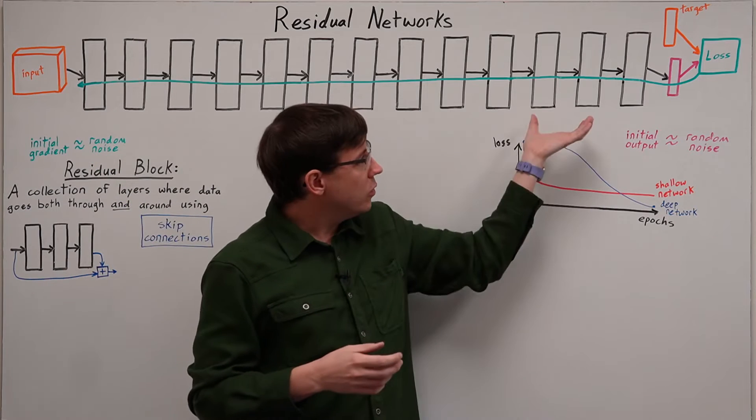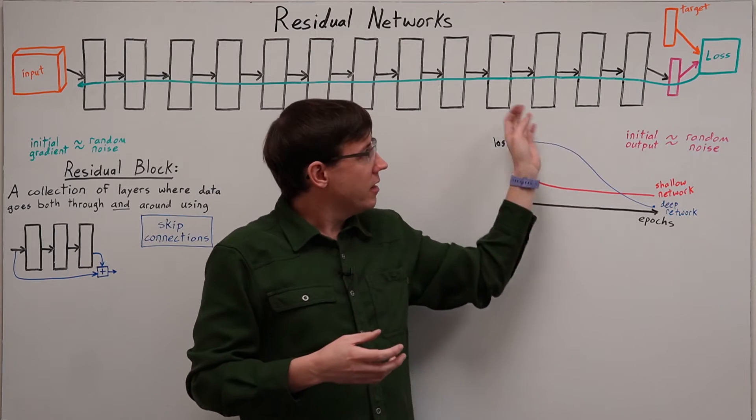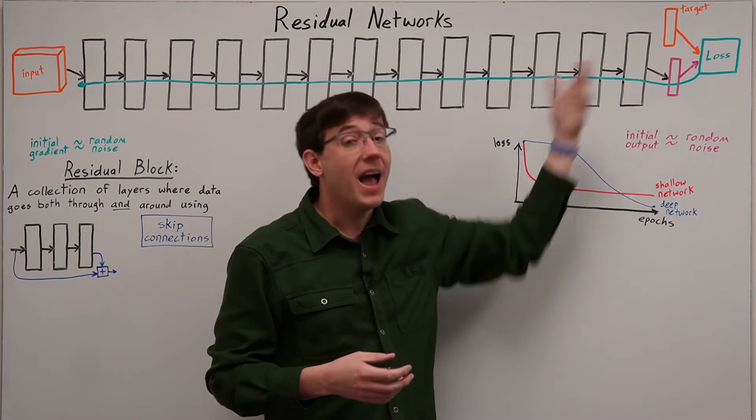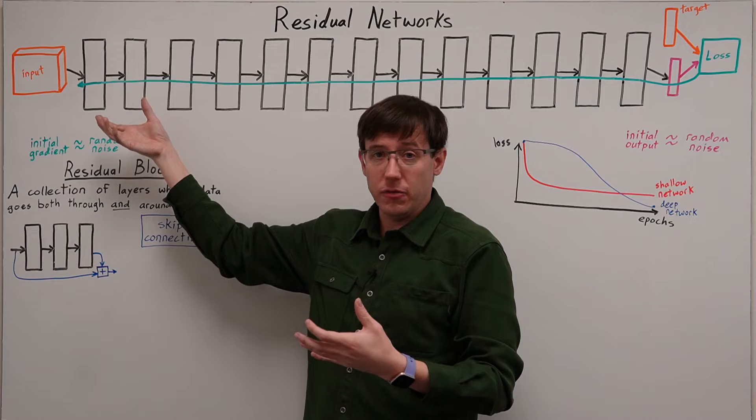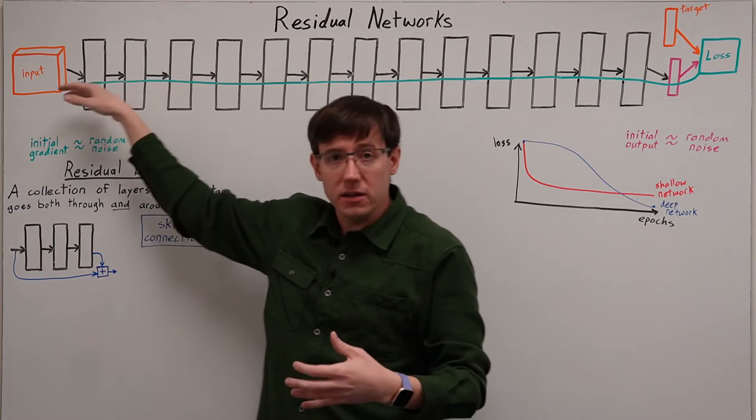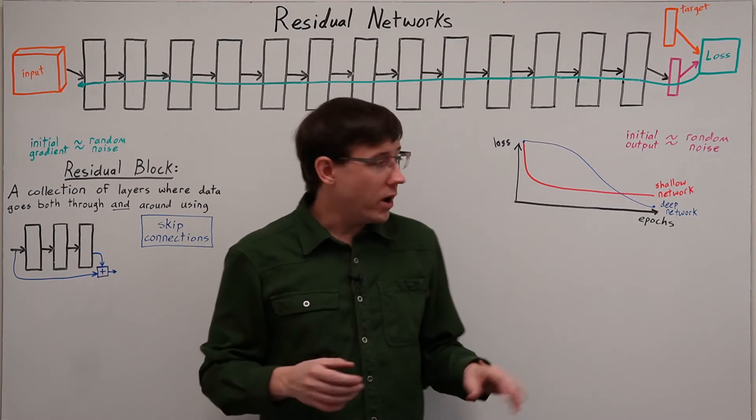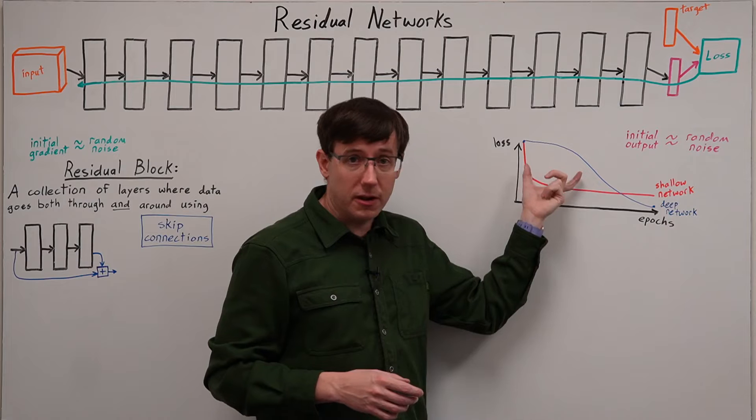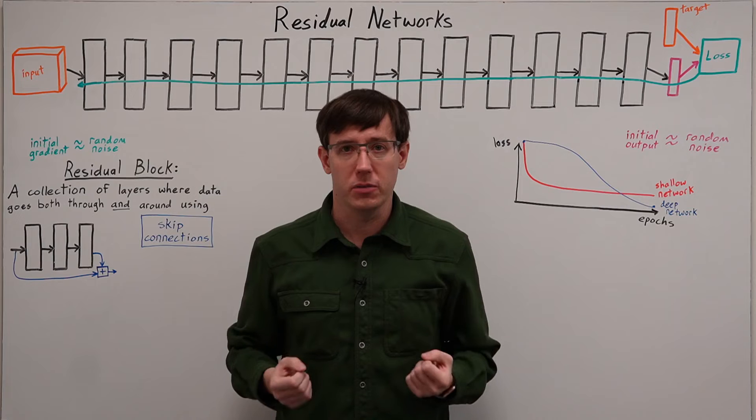And so the updates that we do to the later layers aren't very meaningful, because their inputs have been scrambled and don't mean very much. And the updates we do to the early layers aren't very meaningful, because their gradients have been scrambled and don't mean very much. And so this is why we tend to see not much improvement for an awful lot of training time, as gradient descent essentially wanders around randomly.